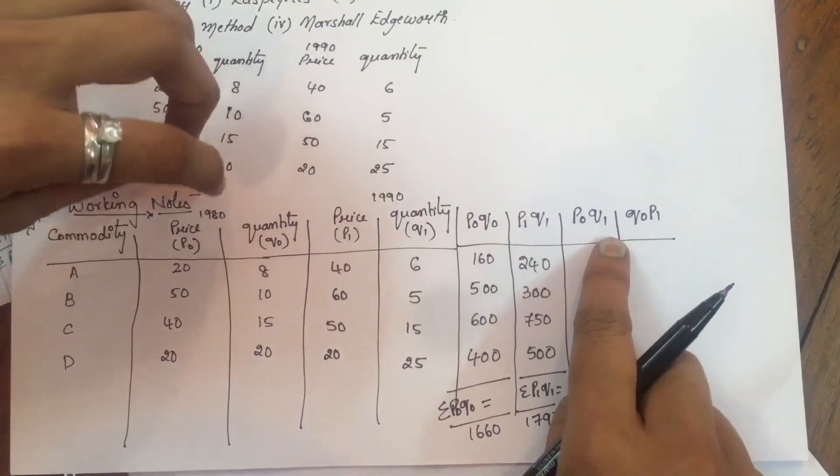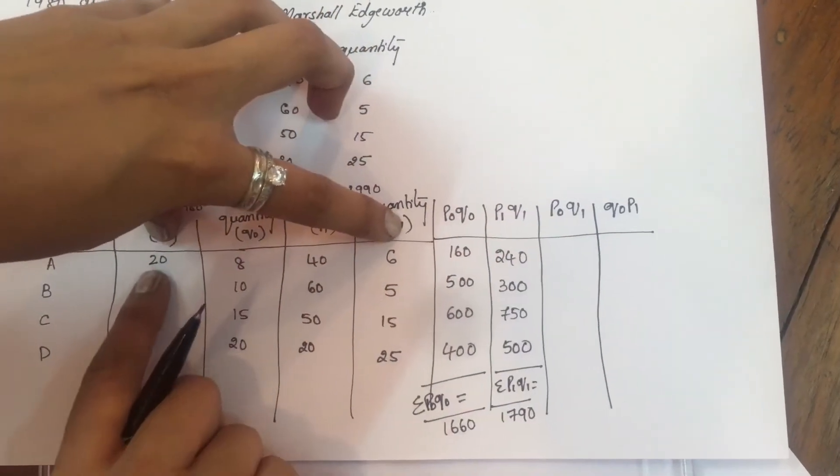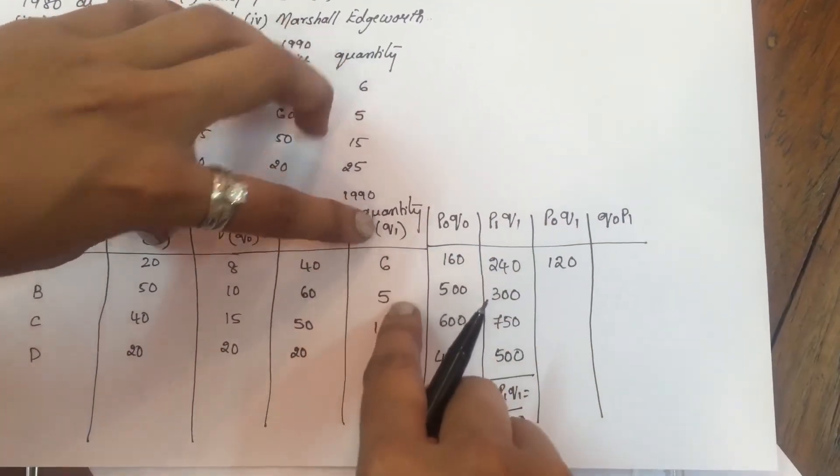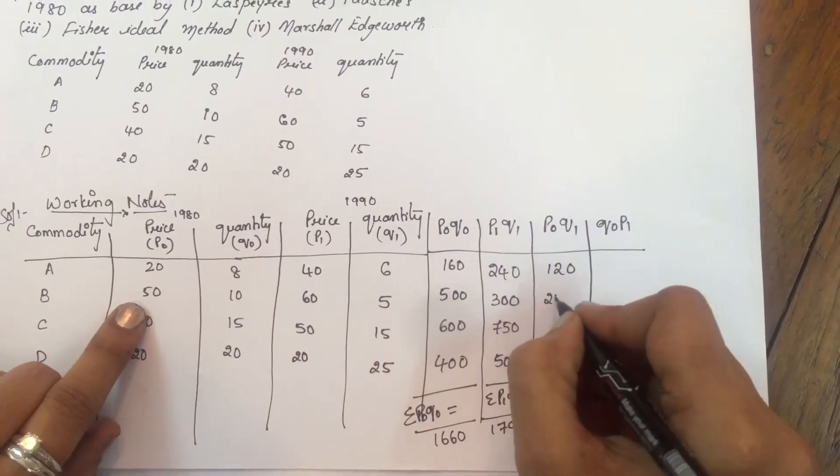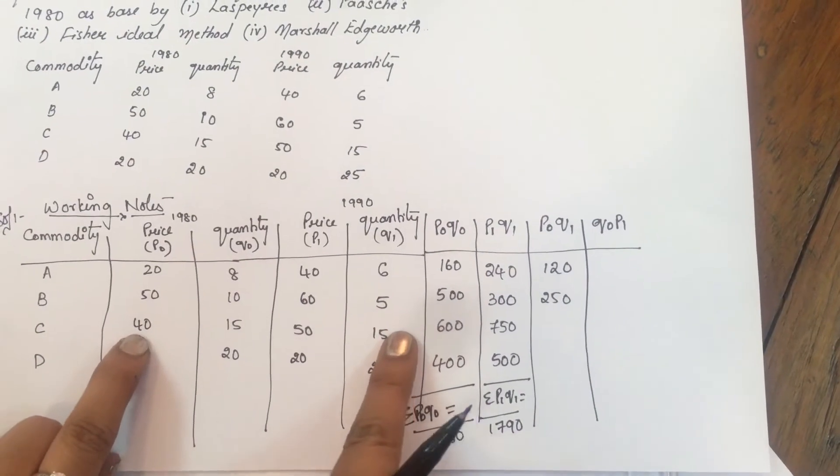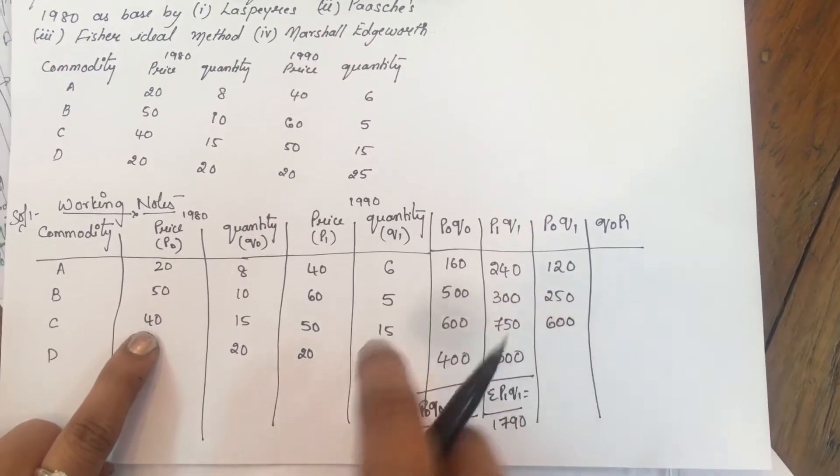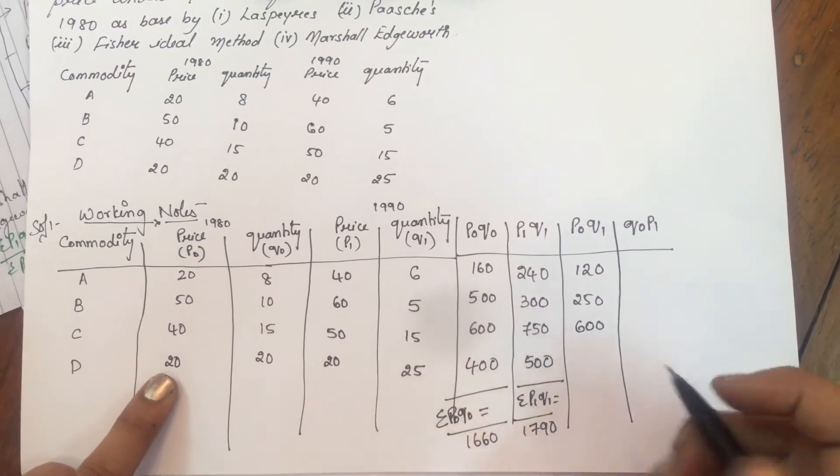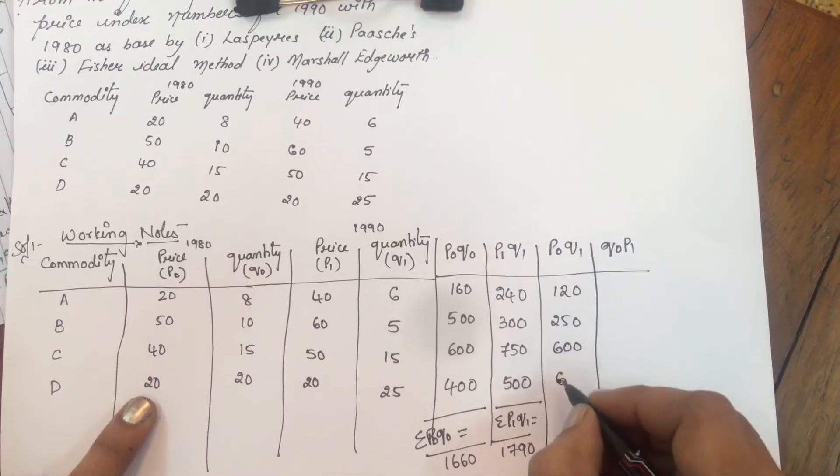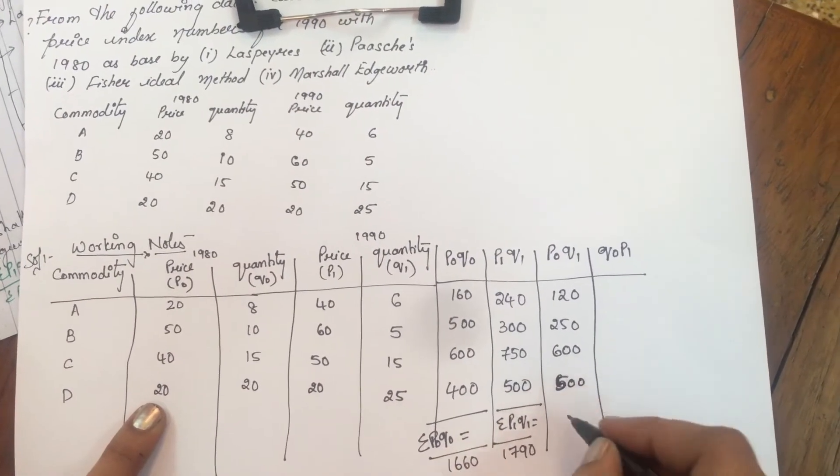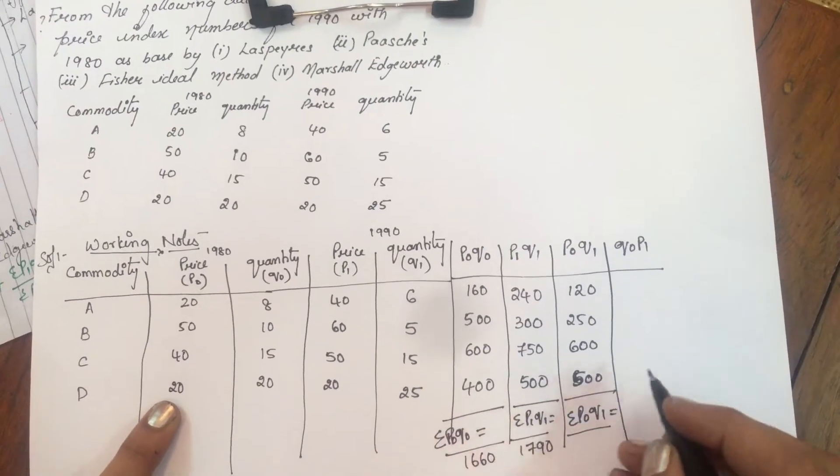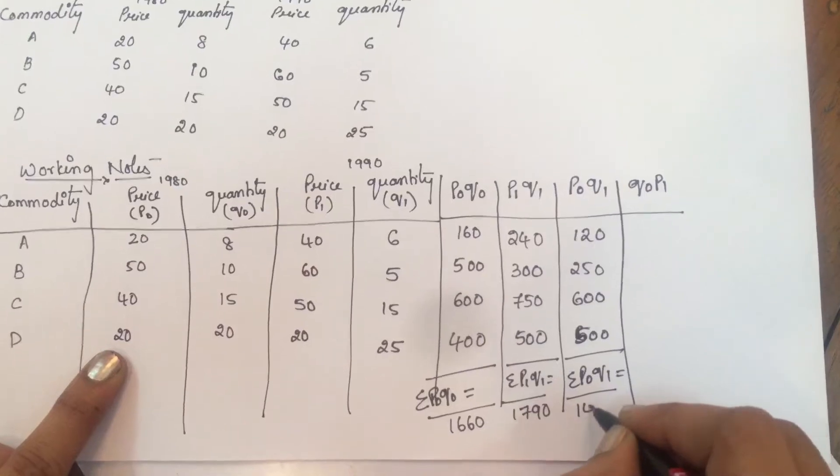Then P0 Q1. 20 into 6 is 120, 50 into 5 is 250, 40 into 15 is 600, 20 into 25 is 500. Sigma P0 Q1 equal to 1470.